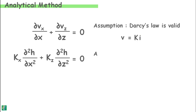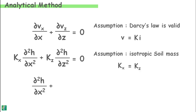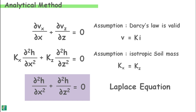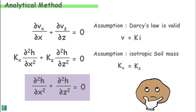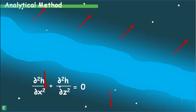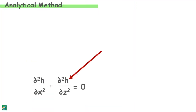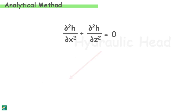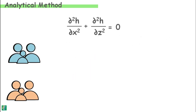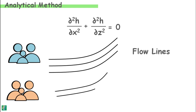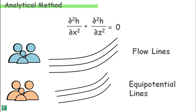If the soil is isotropic, permeability in the x direction equals permeability in the z direction. Finally, we arrive at a neat partial differential equation called the Laplace equation. This equation describes the loss of energy through space — in our case, the energy is hydraulic head. When we solve this equation, we receive two families of curves: one set known as flow lines (psi lines) and the other as equipotential lines (phi lines). Once we get these lines, we get our flow net and can calculate desired quantities like seepage through the soil.